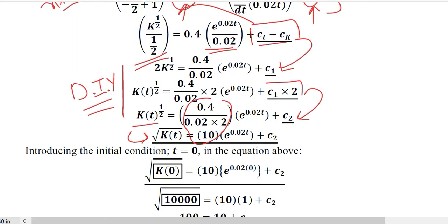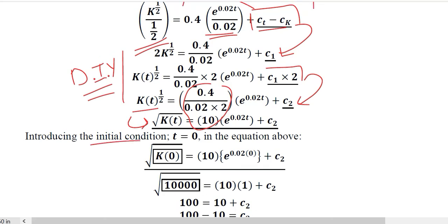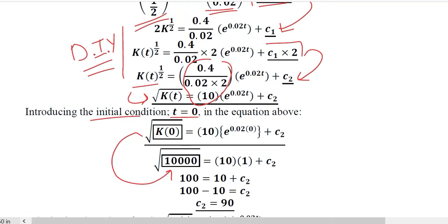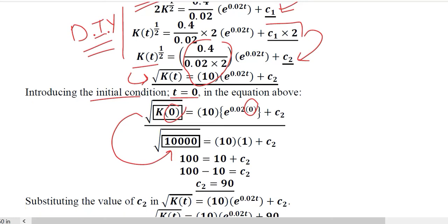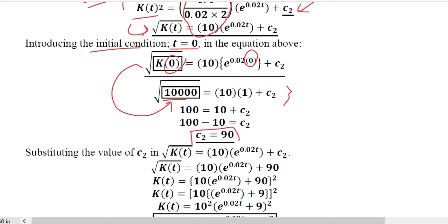The left-hand side simplifies to the square root of K as a function of time. We now apply the initial condition: at T equals 0, K equals 10,000. Substituting these values, we solve for the constant C2 and find it equals 90. This value of C2 is then substituted back into the expression.